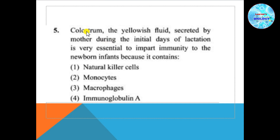Colostrum is very important for the newborn. It contains protective antibodies, high protein, and immune cells. Natural killer cells target virally infected cells. Macrophages perform phagocytosis. Immunoglobulin protects the mucous membranes in the throat, lungs, and intestines of the infant. The answer is immunoglobulin — that is answer number 4.